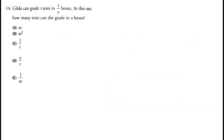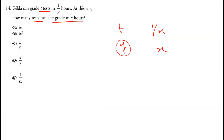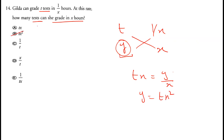Gilda can grade t tests in one over x hours. At this rate, how many tests can she grade in x hours? Let the number of tests equal y. Cross-multiplying gives tx equals y over x, so y equals tx squared. Option B is correct.